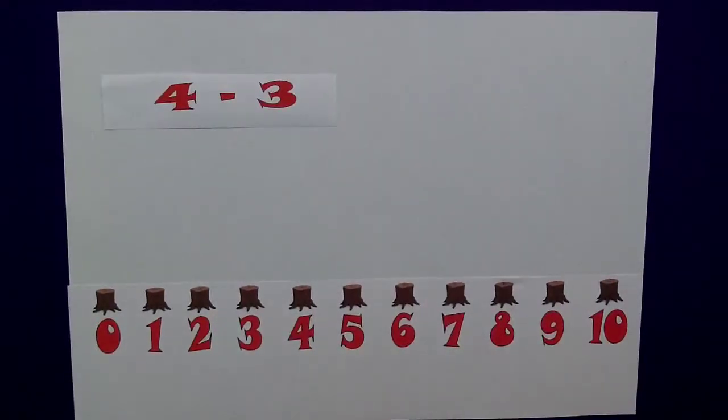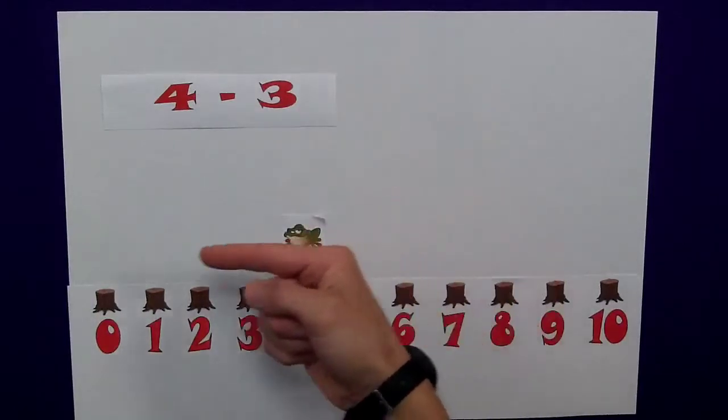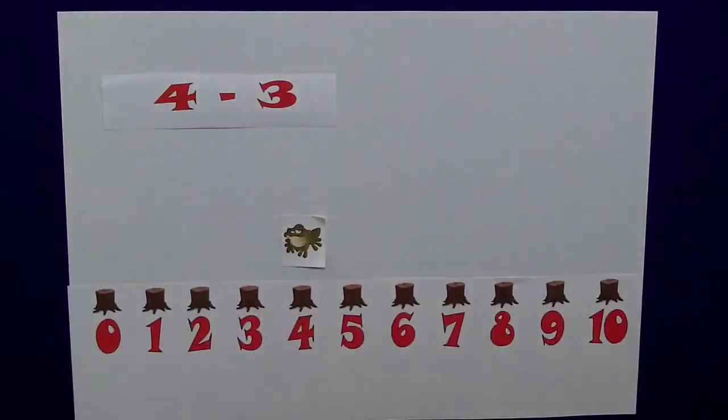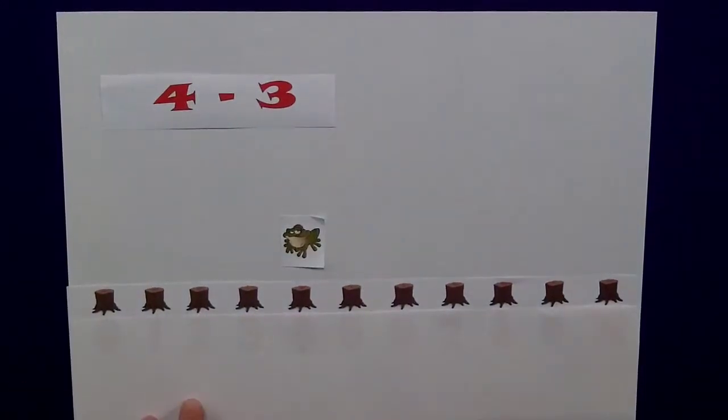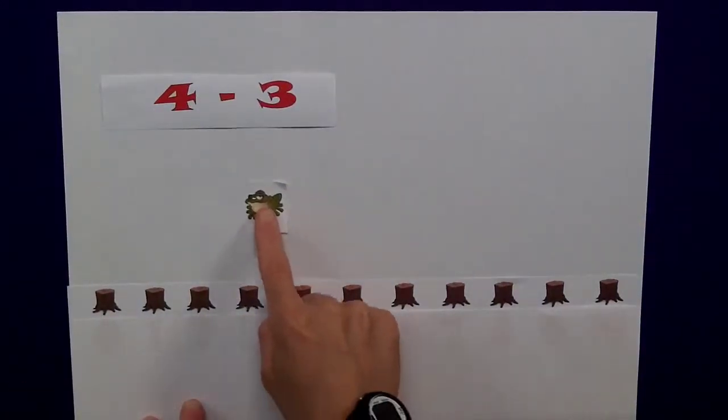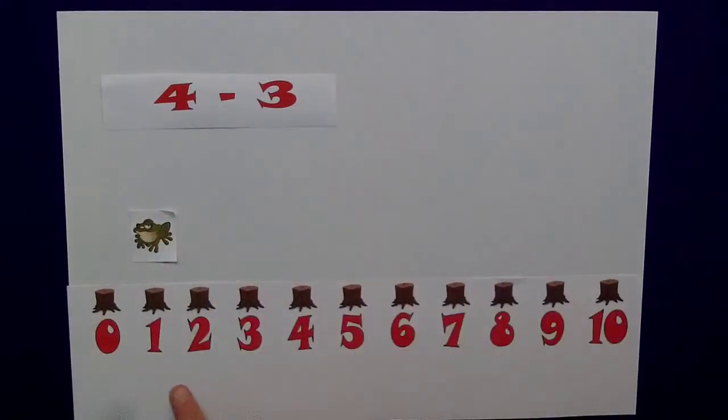Another subtraction, Freddie here is going to start at 4, remembering he's jumping this way because it is a subtraction. I'll cover up the number line, pause the clip, see how you do. So, jumping 3 places, 1, 2, 3, we end up at 1.